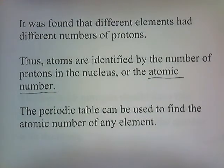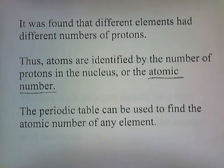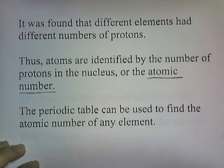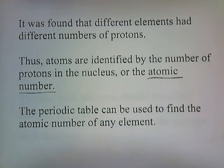It was found that different elements had different numbers of protons. Thus, atoms are identified by the number of protons in the nucleus, or the atomic number. The word atomic number just means the number of protons in the nucleus. The periodic table can be used to find the atomic number of any element.